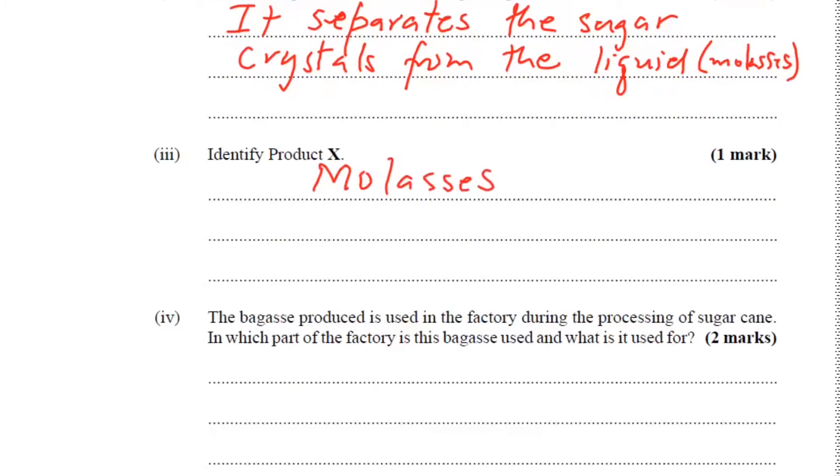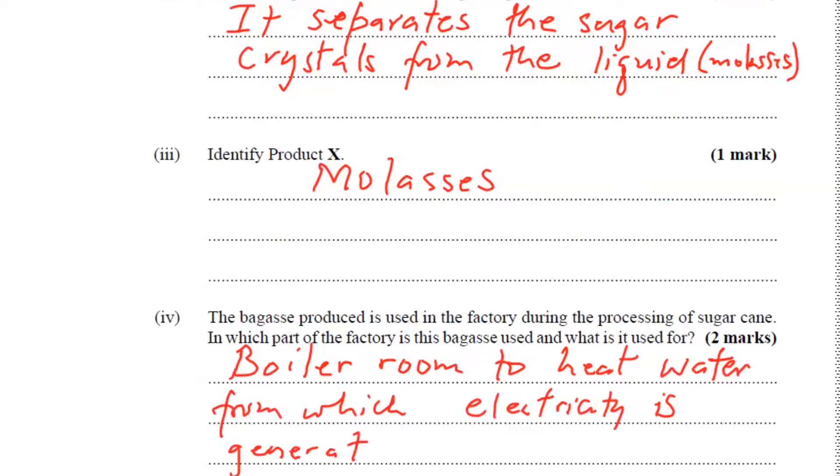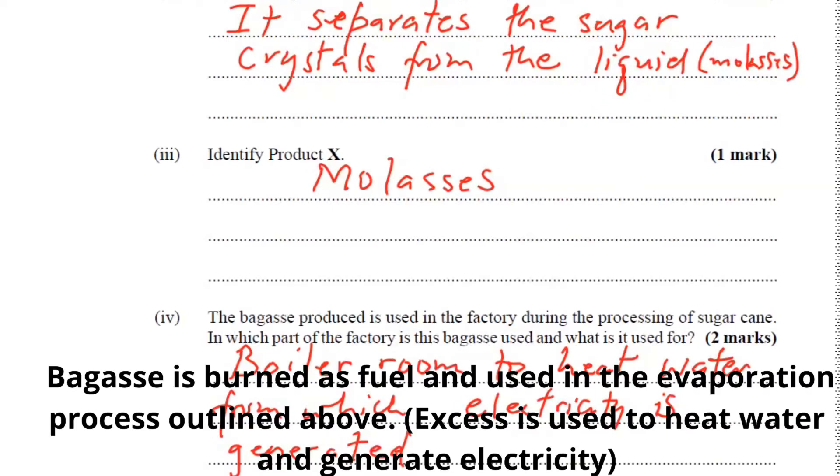Part four, the bagasse produced is used in the factory during the process of sugar cane. In which part of the factory is this bagasse used and what is it for? It's used in the boiler room to heat water from which electricity is generated. So, it's a vertical process. Nothing is wasted. Everything is used.